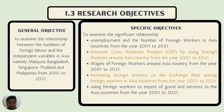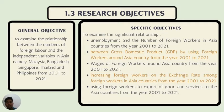Section 1.3 — Objectives. There are two general objectives and specific objectives. The general objective is to examine the relationship between the number of foreign labor and independent variables in Asia — namely Malaysia, Bangladesh, Singapore, Thailand, and Philippines — from 2001 to 2021, covering 10 years. The variable that influences macroeconomic factors most strongly will also be examined to find the relationship between the variables themselves.